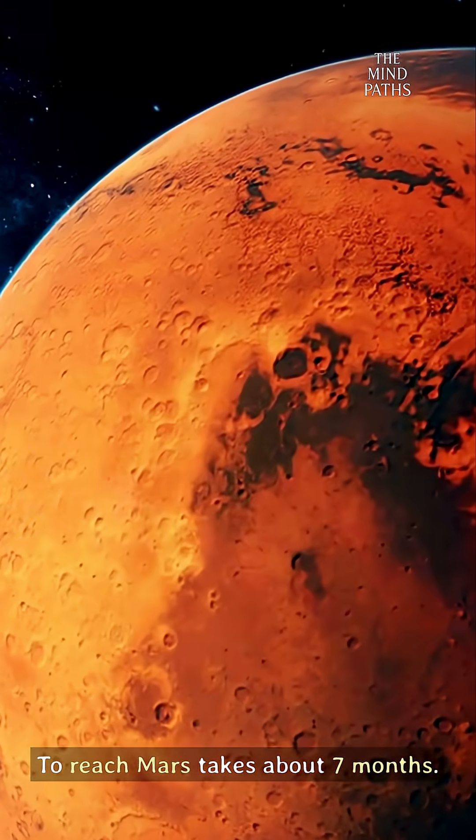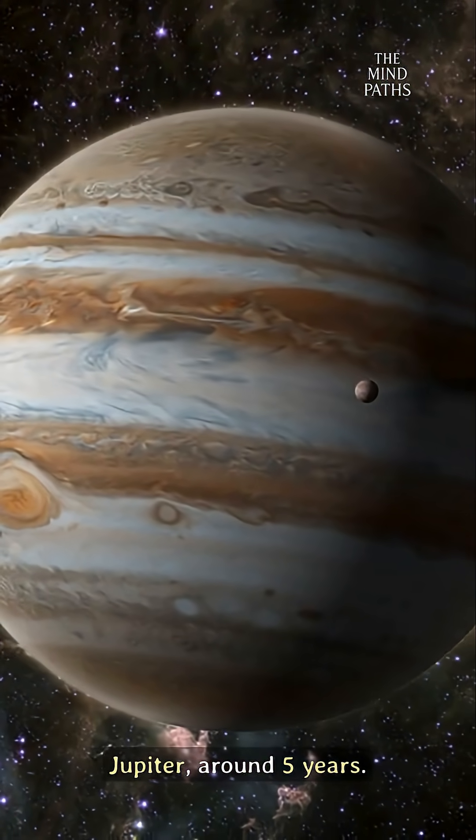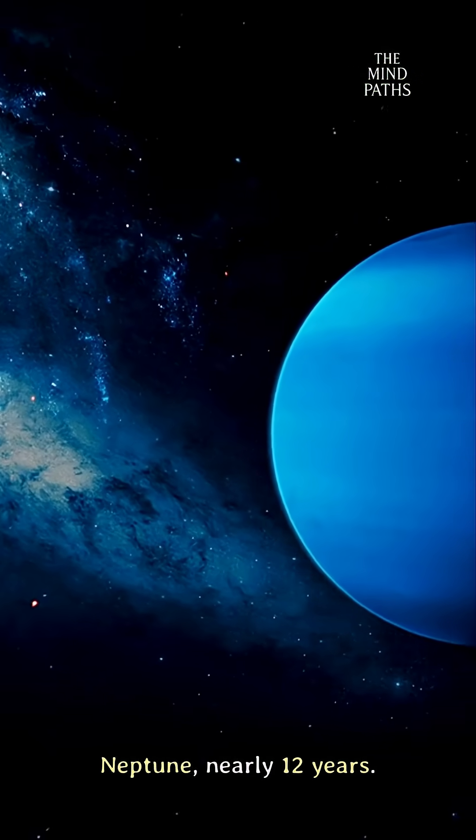To reach Mars takes about seven months. Jupiter, around five years. Neptune, nearly 12 years.